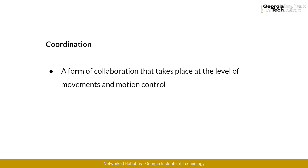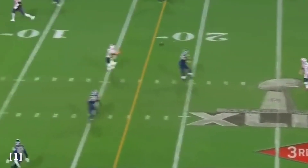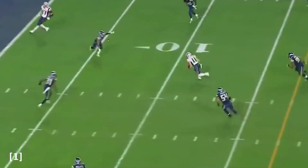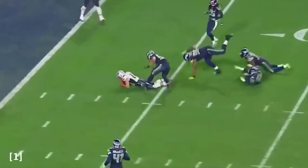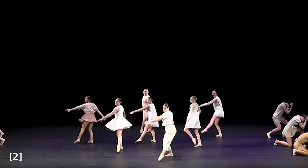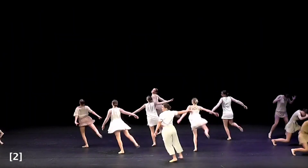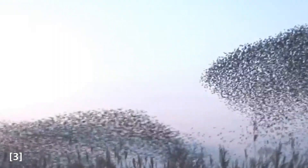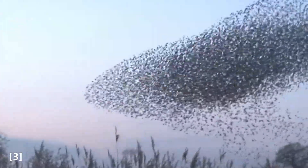Related to the idea of collaboration, we will often encounter the concept of coordination. One way of defining coordination is to say that it's a form of collaboration that predominantly manifests itself through the movement of individuals — for example, the collaboration between players of a football team, dancers performing on a stage, or a flock of birds moving in the sky.